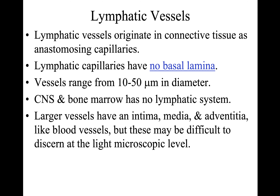The size range of lymphatic capillaries is typically 10 to 50 micrometers in diameter. The central nervous system and bone marrow have no lymphatic system. Larger lymphatic vessels may contain tunica intima, media, and adventitia, but these may be difficult to discern at the level of the light microscope because they look almost like veins, making differentiation difficult.